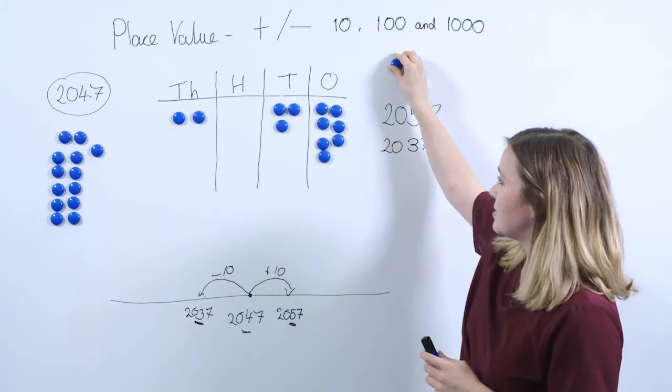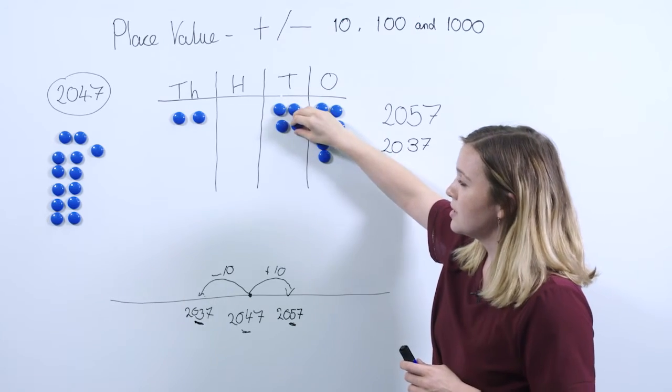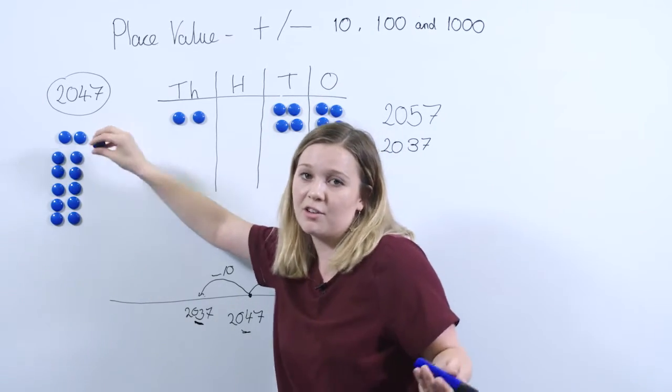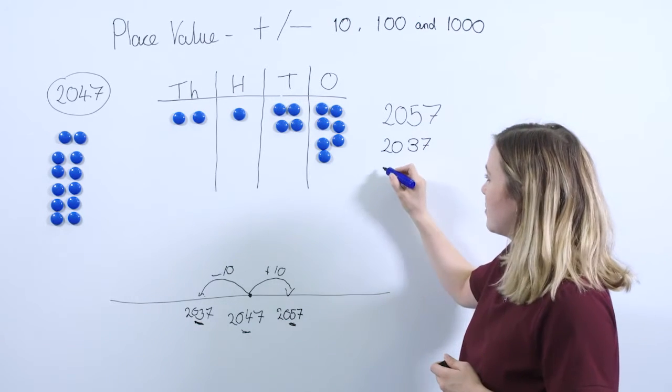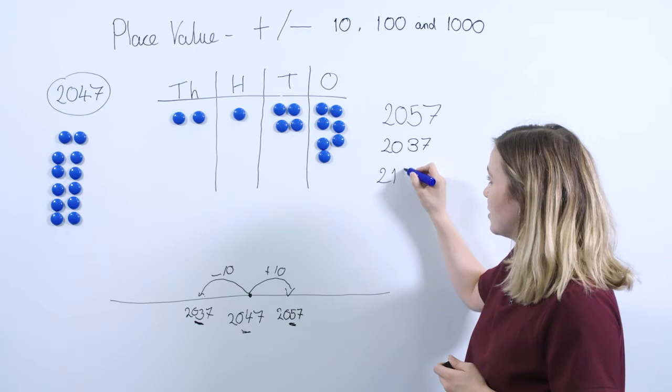Again, you can follow the same process but for adding a hundred. So this time, what happens if I add a hundred to my number? I'm going to put an extra hundred in that column there. So this time our number is 2147.